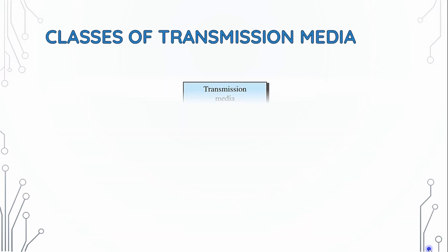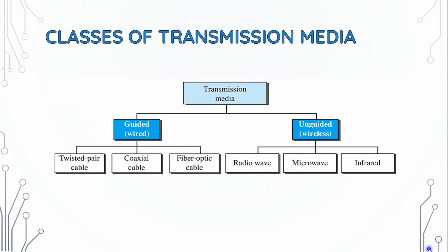Classes of transmission media: Transmission media is guided, meaning wired, or unguided, meaning wireless. For guided wired transmission media, we have three types: twisted wire cable, coaxial cable, and fiber optic cable. For unguided wireless transmission media, we also have three types: radio wave, microwave, and infrared.